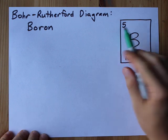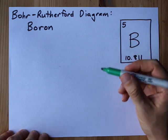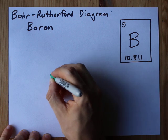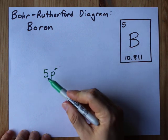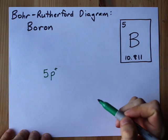The atomic number itself gives you the number of protons in the atom. You're probably going to have to write that inside the nucleus. I'm going to write 5 p pluses to show that there are 5 positively charged protons there.